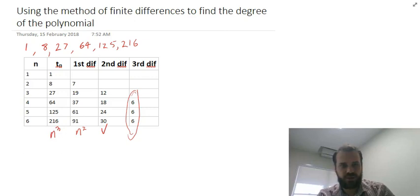So we can say that this sequence, 1, 8, 27, 64, 125, 216, can be modeled with a cubic function.